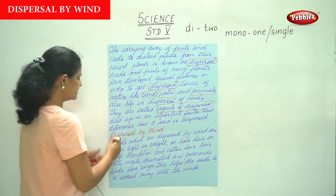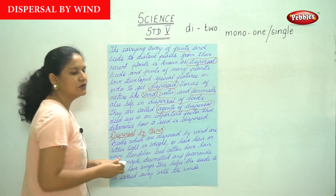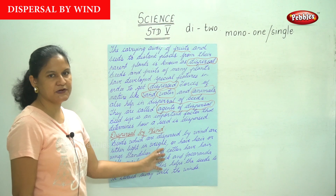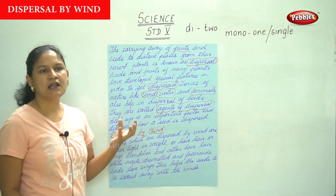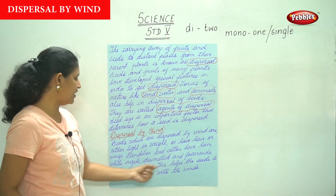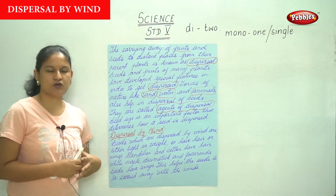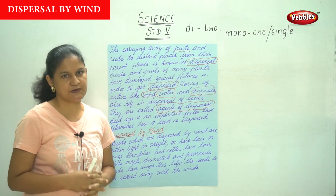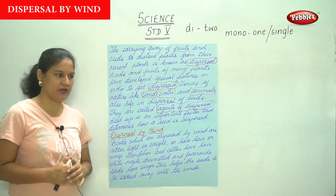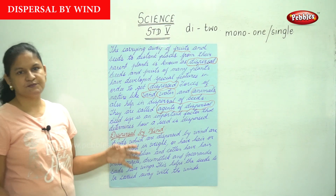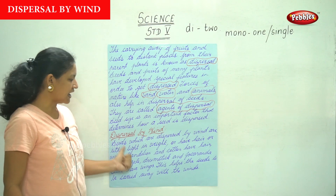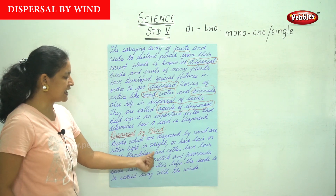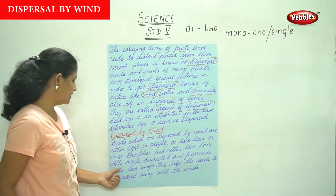Now talking about dispersal by wind — how a seed is dispersed by wind. Seeds which are dispersed by wind are either light in weight or have hair or wings. Dandelion and cotton have hair, while maple, drumstick and jacaranda seeds have wings.